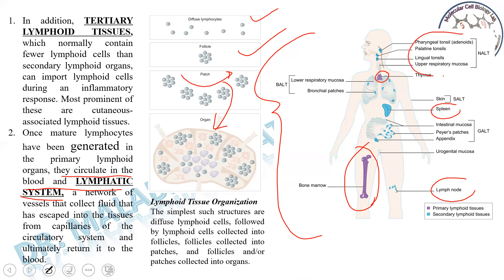We have lymphoid tissue associated with the mucosal lining around our respiratory tract. We have bronchial patches, gut-associated lymphoid tissue, intestinal mucosa, Peyer's patches, appendix, and urogenital mucosa. We also have skin-associated lymphoid tissue. These are the various categories: bronchus-associated, nasal-associated, skin-associated, and gut-associated lymphoid tissue.